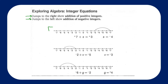Take a moment to look at our first number line. We start at positive 7, and if we add negative 4, that means we're going to jump negative 4, which is 4 leaps to the left. We will end at positive 3.